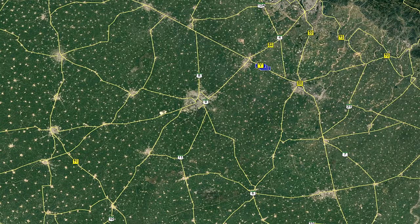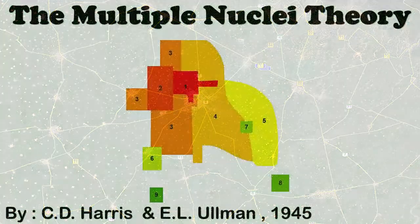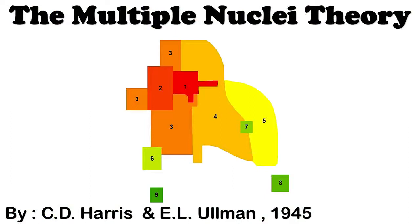So a less rigid model capable of application to a variety of urban patterns was proposed by C.D. Harris and E.L. Ullman in 1945.